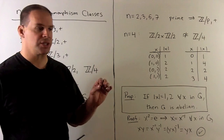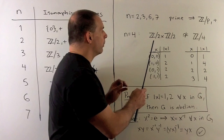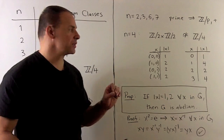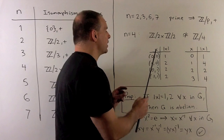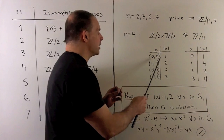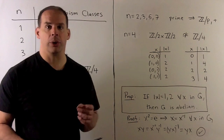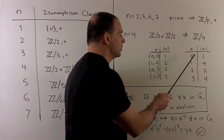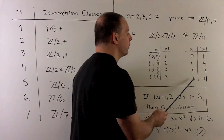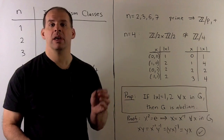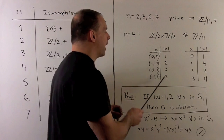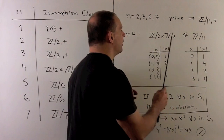That leaves us with N equal to 4 and N equal to 6. For N equal to 4, we'll first show that the direct product Z2 × Z2 is not isomorphic to Z mod 4 by comparing orders of elements. For Z2 × Z2, we have all ordered pairs with entries in Z mod 2 — so 0 or 1. The identity element (0,0) has order 1, and all other elements have order 2. For Z mod 4 with elements 0, 1, 2, 3: 0 has order 1, elements 1 and 3 have order 4, and 2 has order 2. By comparing, the orders of elements don't match, so there's no way these two groups can be isomorphic.